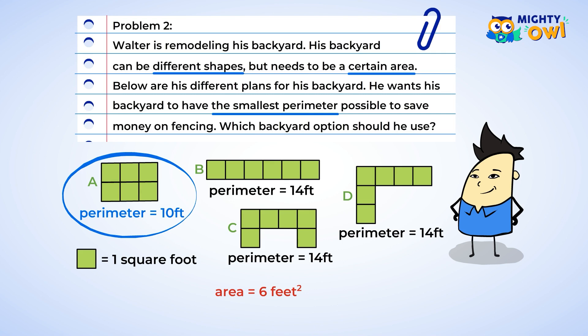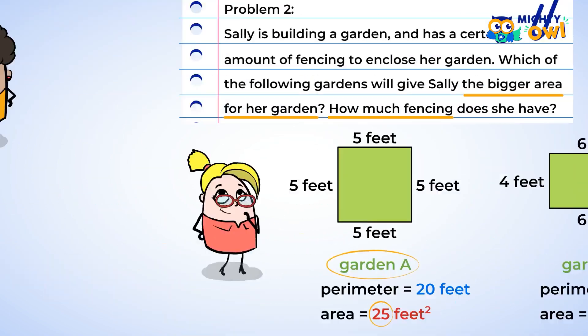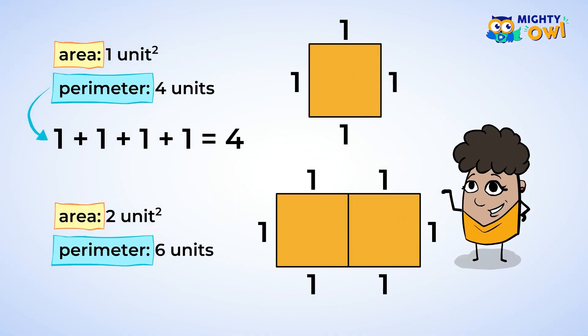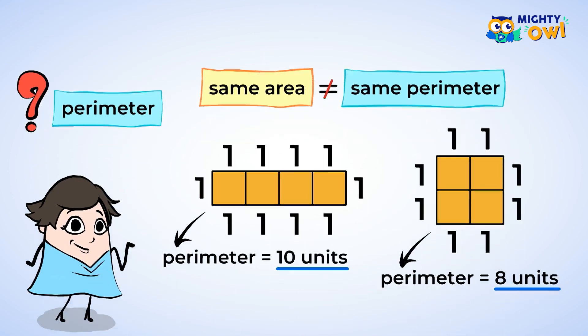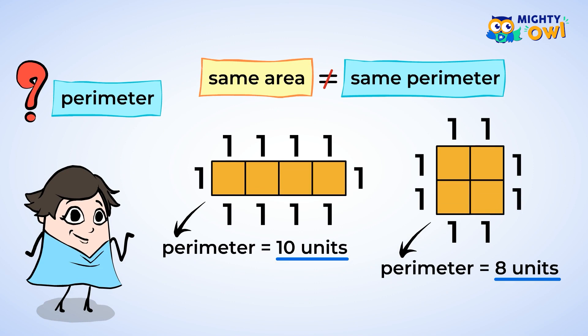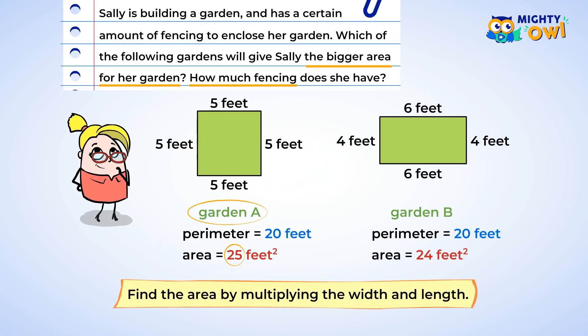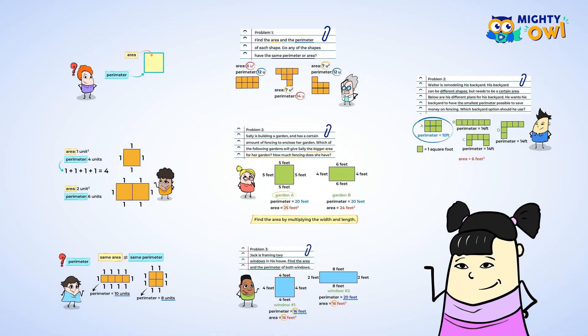What a great job exploring the area and perimeter of shapes! You refreshed your skills on finding the perimeter by adding up all the sides, and you also used multiplication to find the area. You were able to compare perimeter and area and find that some shapes have the same area but not the same perimeter, and also that some shapes which have the same perimeter may not have the same area. It was so fun discovering that — I'm excited to explore more math in the next lesson with you.